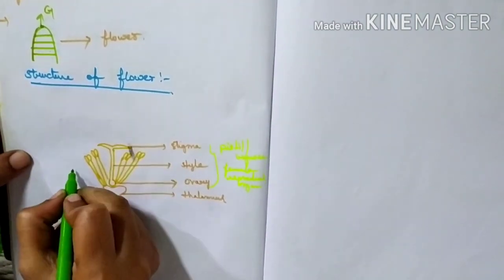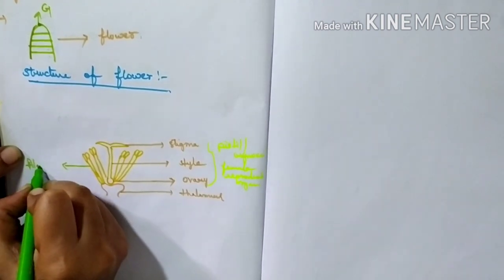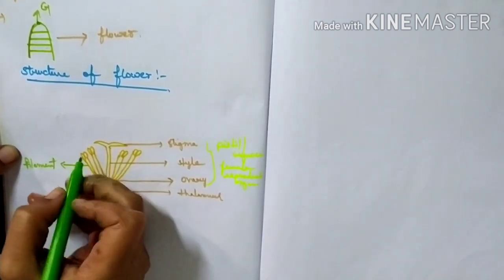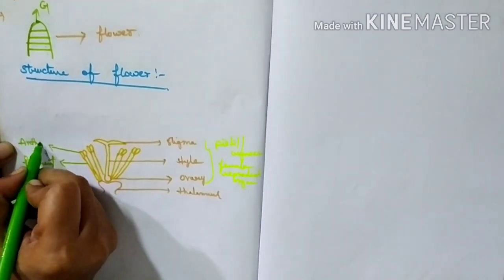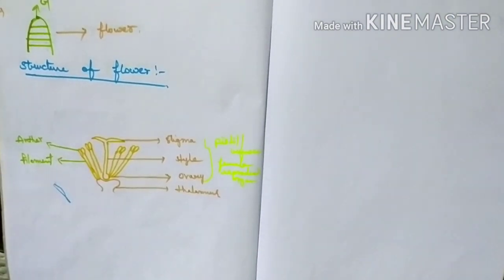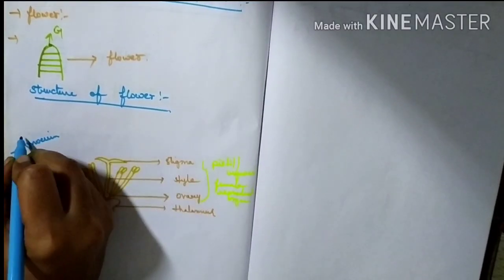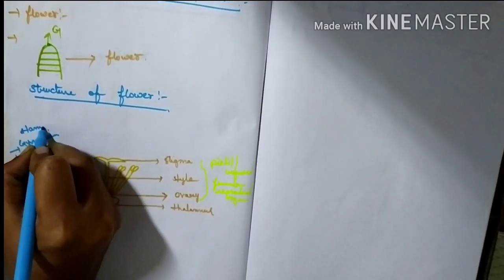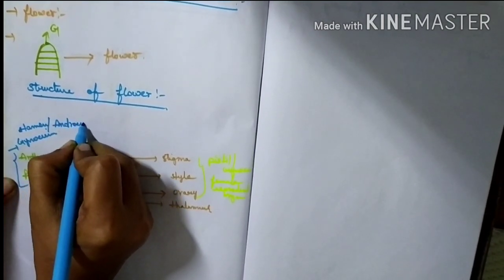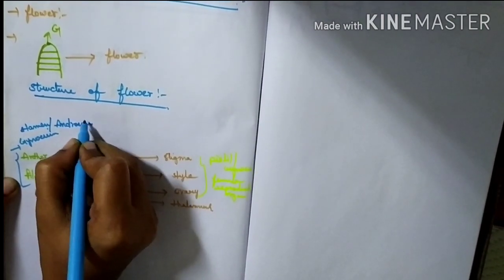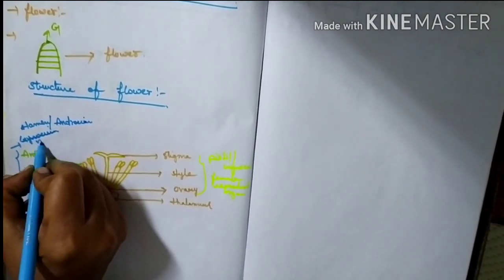The long stalk-like structure you are seeing is called the filament, and the bilobed structure is called the anther. Together, the anther and filament are called the stamen, which forms the androecium — the male reproductive organ.